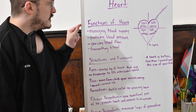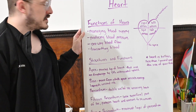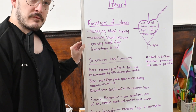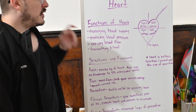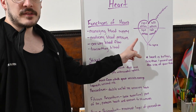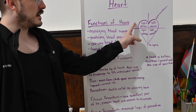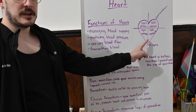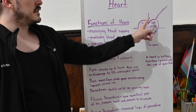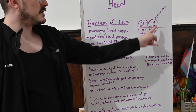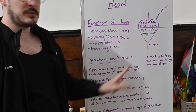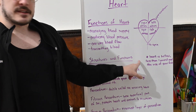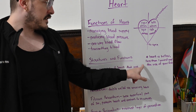The functions of the heart include managing blood supply, producing blood pressure, one-way blood flow, and transmitting blood. Here is a diagram of the heart showing the right atrium, right ventricle, left atrium, and left ventricle. There are also arrows pointing to the pericardium, which is the outer layer, and the apex, which is the bottom of the heart.